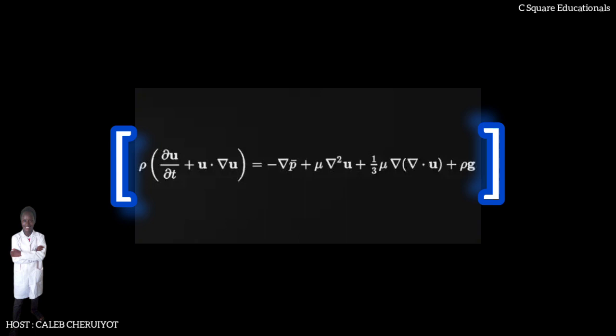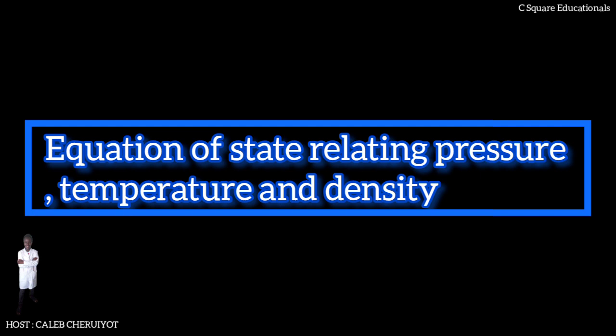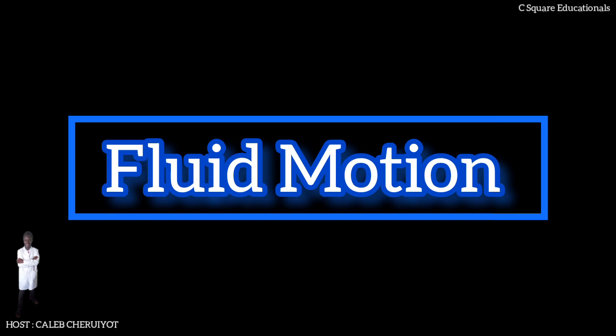The Navier-Stokes equations mathematically express conservation of momentum and conservation of mass for Newtonian fluids. They are sometimes accompanied by an equation of state relating pressure, temperature, and density. They arise from applying Isaac Newton's second law to fluid motion, together with the assumption that the stress in the fluid is a sum of a diffusing viscous term proportional to the gradient of velocity and a pressure term.